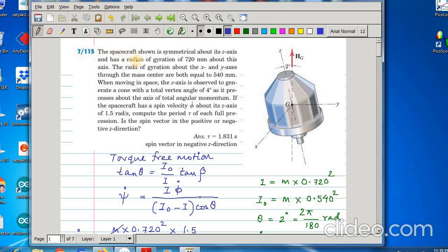And here the radius of gyration of 720 millimeter about this axis. So, iz which according to Merriam's notation is i is m into 0.720 squared and the radius, radii of gyration about the x and y axis through the mass center are both equal to 540 meter. That means the radius of gyration about x and y which according to Merriam's notation is i naught is equal to m into 0.540 square.